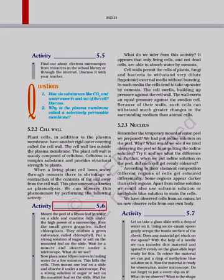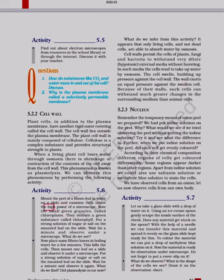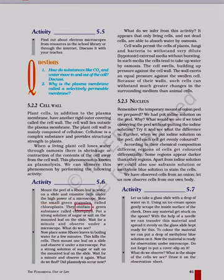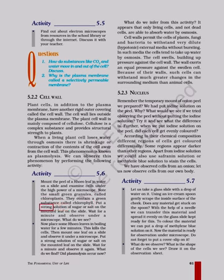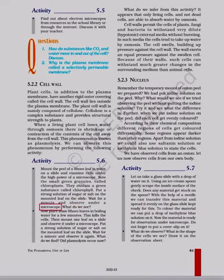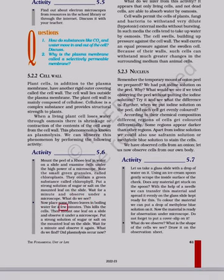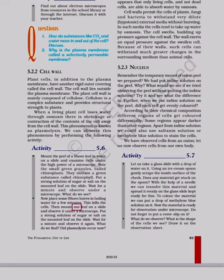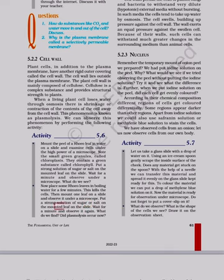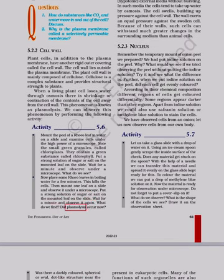Activity 5.6: Mount the peel of a Rhoeo leaf in water on a slide and examine cells under the high power of a microscope. Note the small green granules called chloroplasts — they contain a green substance called chlorophyll. Put a strong solution of sugar or salt on the mounted leaf on the slide. Wait for a minute and observe under the microscope. What do we see? Now place some Rhoeo leaves in boiling water for a few minutes — this kills the cells. Then mount one leaf on a slide and observe it under a microscope. Put a strong solution of sugar or salt on the mounted leaf on the slide. Wait for a minute and observe it again. What do we find? Did plasmolysis occur now?